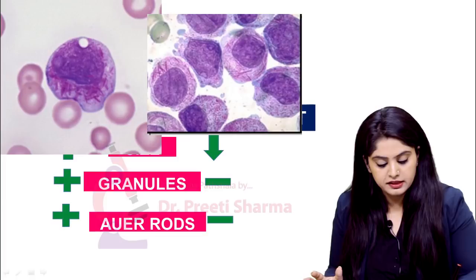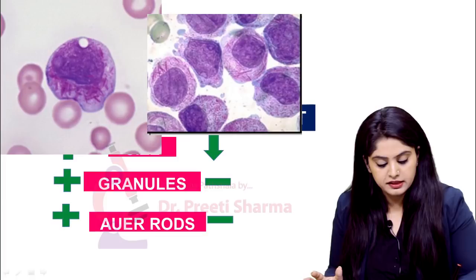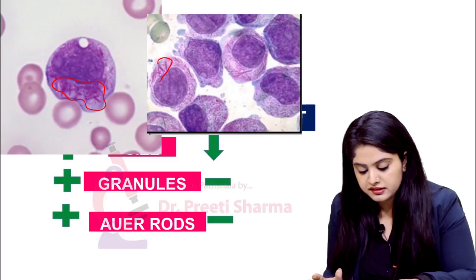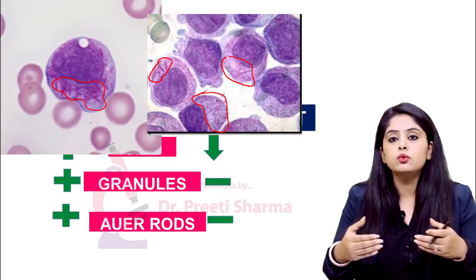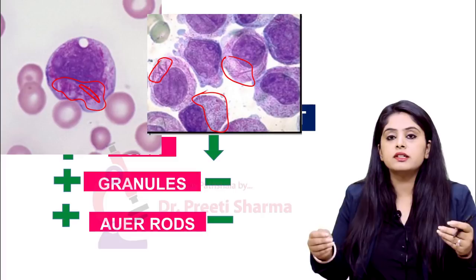Let's see more examples of Auer rods. These two images are full of Auer rods — you can easily appreciate them. This cell, this entire area, all of these cells are studded with Auer rods. They are nothing but granules that have fused and taken the shape of a rod — all the granules combined, they formed a rod.